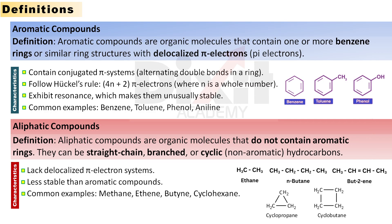Aromatic compounds are defined as organic molecules that contain one or more benzene rings or similar ring structures with delocalized pi electrons.